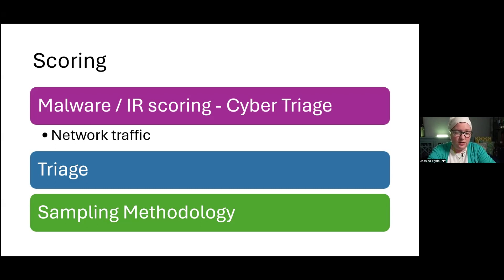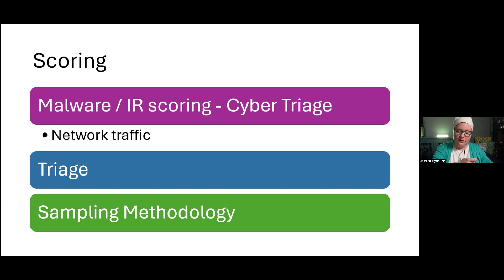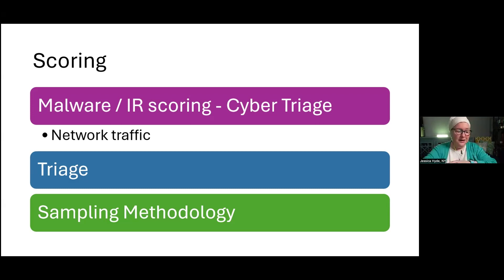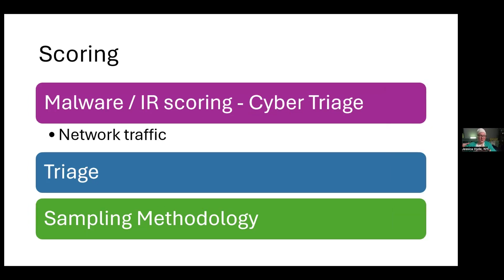Then we have sampling methodology — a very interesting use of scoring. In some jurisdictions, they can look at images containing contraband and extrapolate out based on the number of images on a device and what they find across different sections — determining the proportionality of images that contain particular content. This allows reasoning about how data would be handled based on that sampling methodology, using AI to take a small sample of pictures, assess those, and apply results to the whole based on score ranking from the AI.